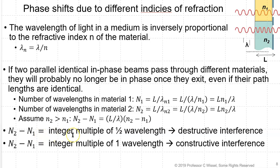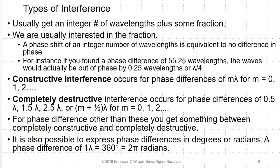If (n₂ − n₁) is an integer number of one-half wavelengths, you have destructive interference. If (n₂ − n₁) is an integer multiple of one wavelength, you have constructive interference. Usually you'll get an integer number of wavelengths plus some fraction, and we're normally only interested in the fraction — a phase shift of an integer number of wavelengths is equivalent to no difference in phase. For example, a phase difference of 55.25 wavelengths means the waves are actually out of phase by 0.25, or λ/4. Constructive interference occurs for phase differences of mλ; completely destructive at (m + ½)λ, for m = 0, 1, 2.